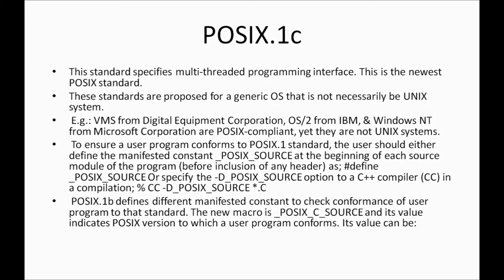To ensure a user program conforms to the POSIX.1 standard, the user should define the constant _POSIX_SOURCE at the beginning of each program — before the header files. This tells the system that the program is using the POSIX.1 standard. You define it using the #define keyword as: #define _POSIX_SOURCE. You can also use the -D_POSIX_SOURCE compiler option, which is suitable when using a C++ compiler.